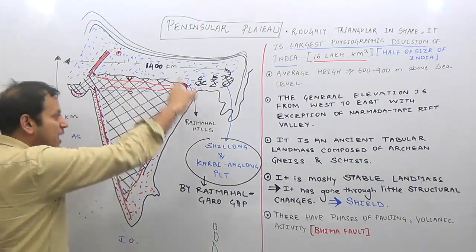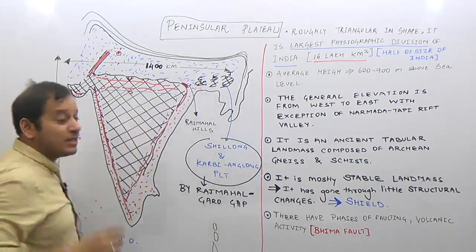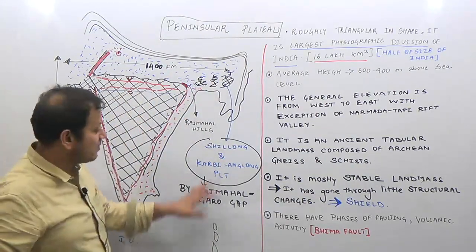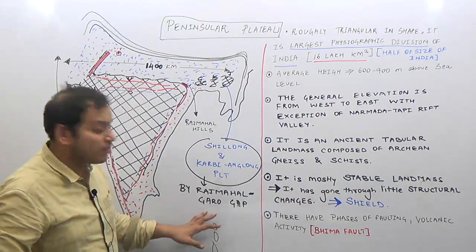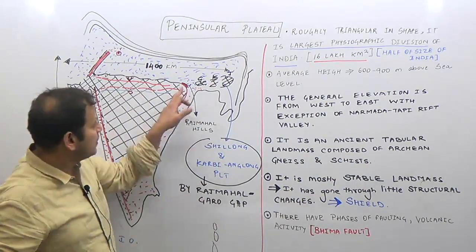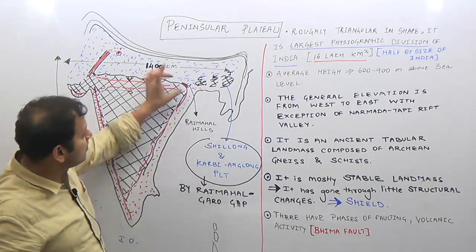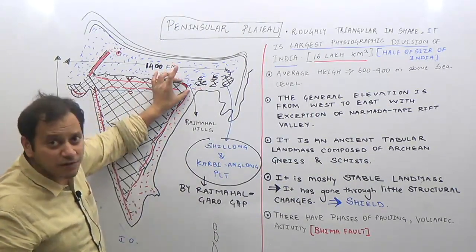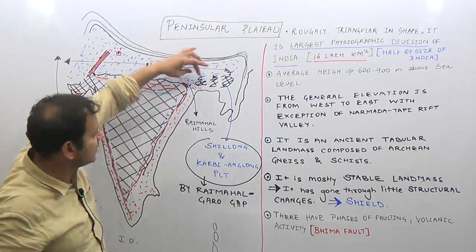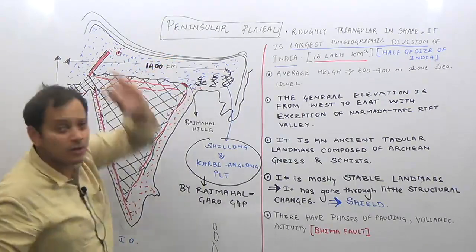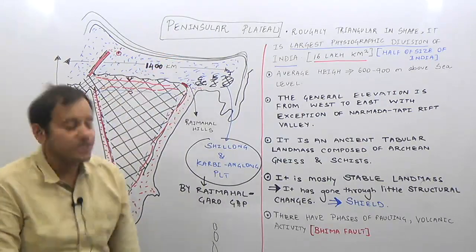The Shillong plateau is separated from the main peninsular plateau by the Rajmahal-Garo Gap — named because of the presence of the Rajmahal Hills on one side and the Garo Hills on the other.